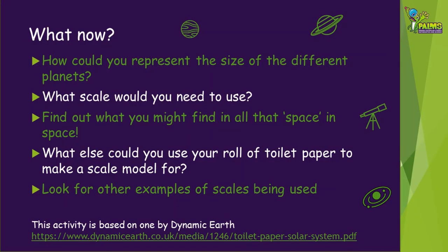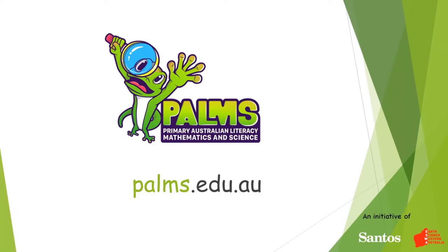After you've collected up your toilet paper scale, here are some other things you might like to try. How could you represent the size of the different planets using a scale? What scale would you need to use this time? Do some research and find out what there is in all that space in space. Could you reuse the toilet paper to make a scale model for something else? Look around for some other examples where scales are being used. Thanks for watching this Palms demonstration video. For more fun, hands-on Earth science activities, visit our website palms.edu.au